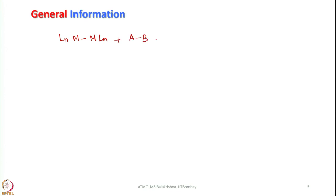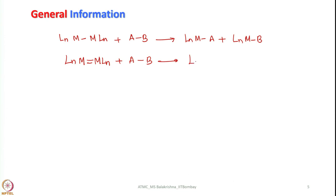Is it possible to perform a binuclear oxidative addition? Yes, there are examples. Let us consider a bimetallic complex having a metal-metal bond and again add a substrate molecule AB. In this case what we get is Ln-M-A and B added to two different metal ions. If you consider a metal-to-metal double bond, the reaction follows this sequence: one bond will be broken and they will be added separately to two independent metal ions, retaining one of the metal-metal bonds.